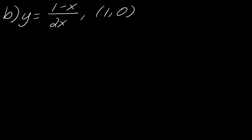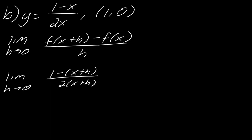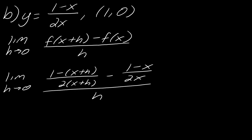Moving on to the next one. I'd highly recommend pausing to try finding the derivative on your own. For this one, I'm writing down f(x+h) minus f(x) — keep writing the formula, it's a great way to memorize it. Plugging in x+h, this becomes a complex fraction. My preference is to find the LCD of the fractions and multiply the top and bottom by that LCD. The LCD here is 2·(x+h)·x.